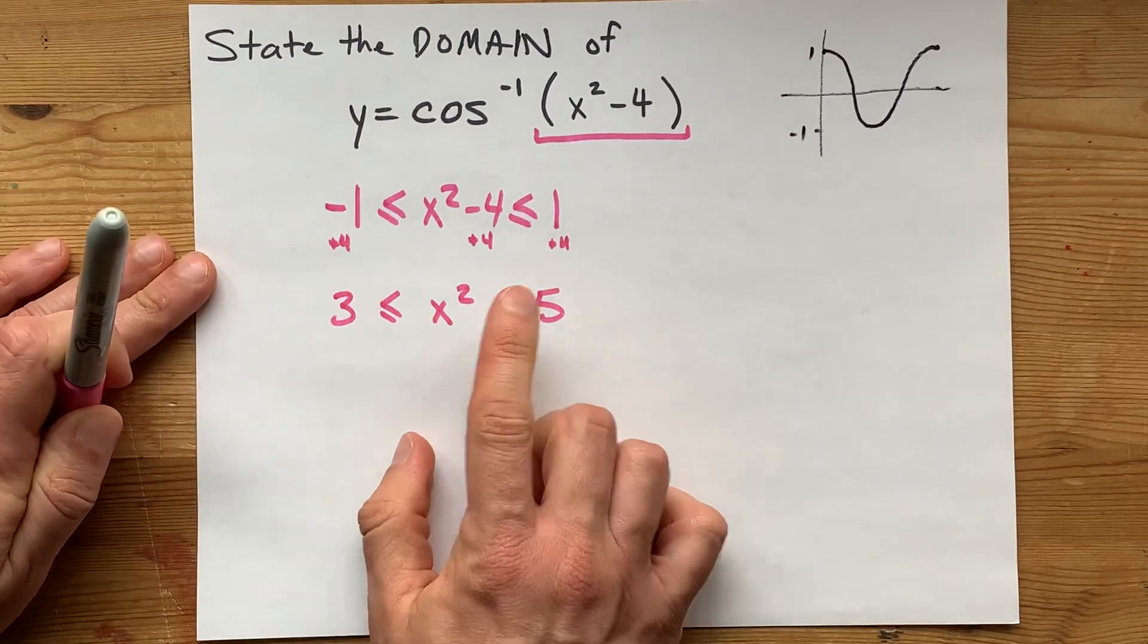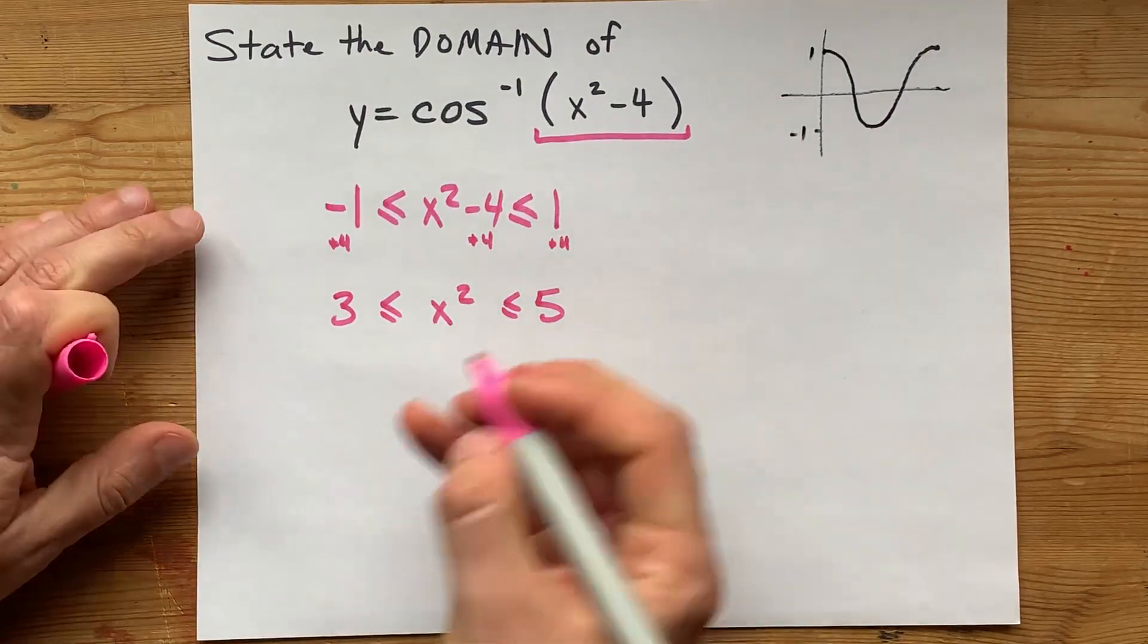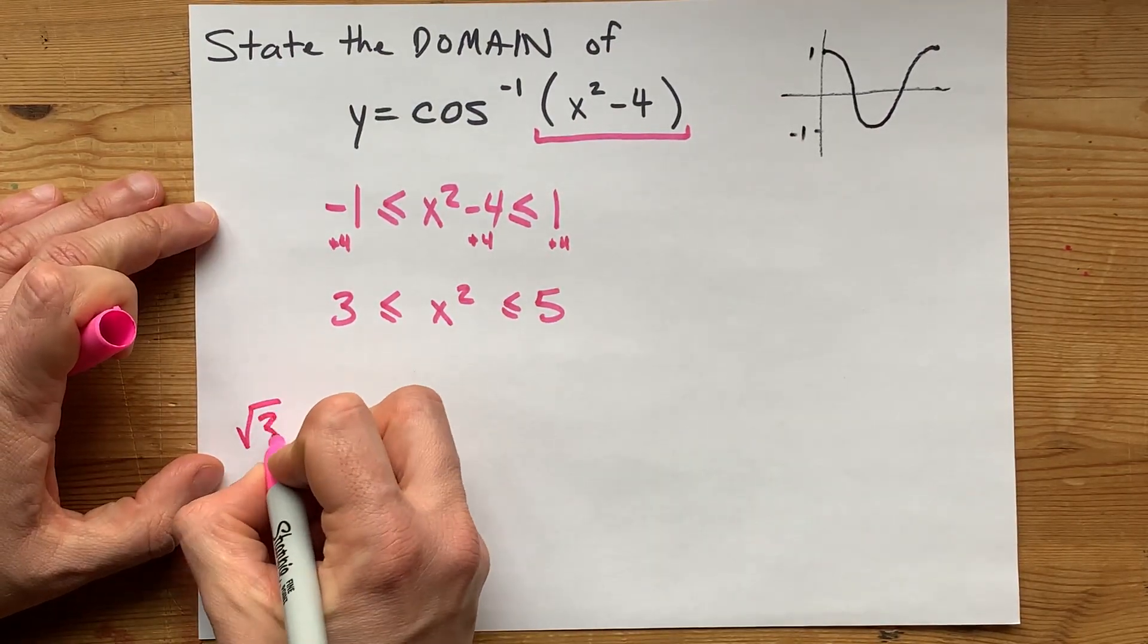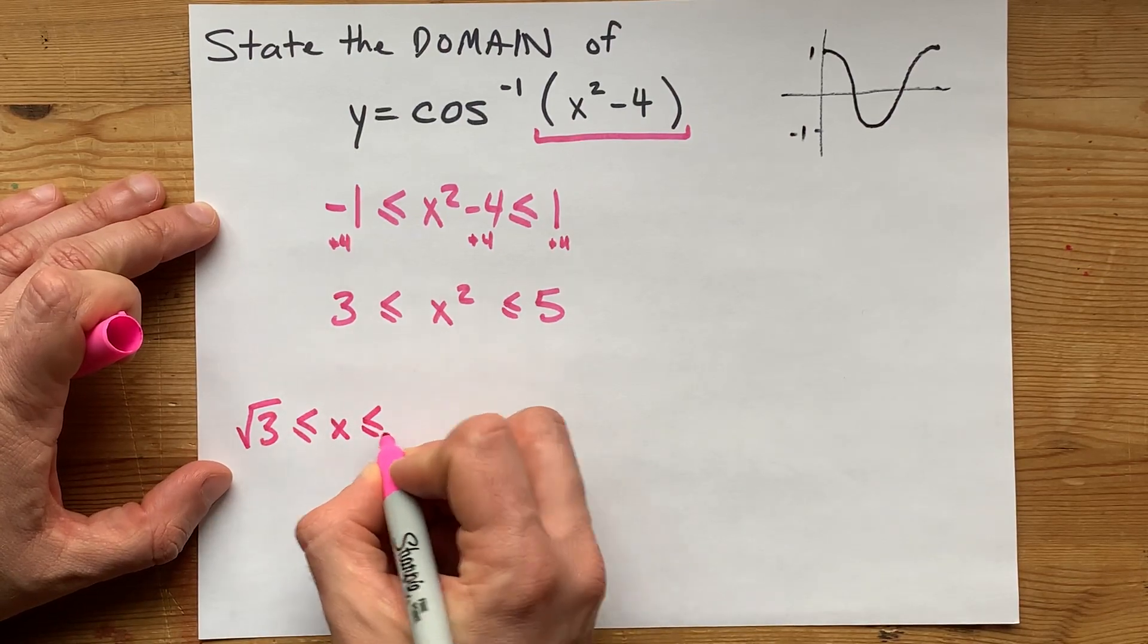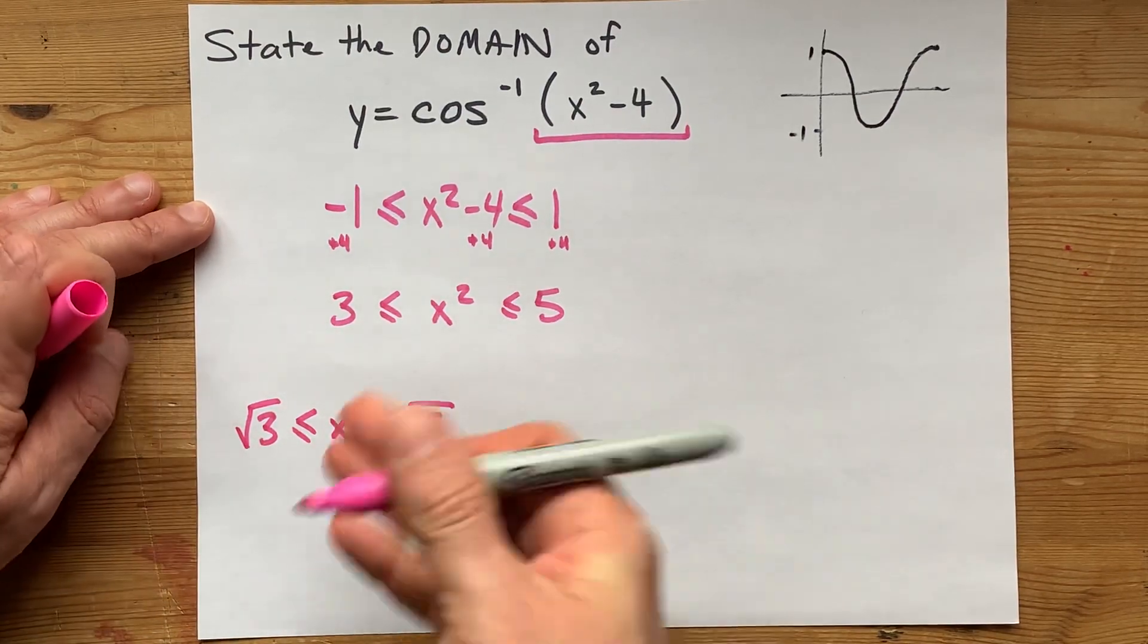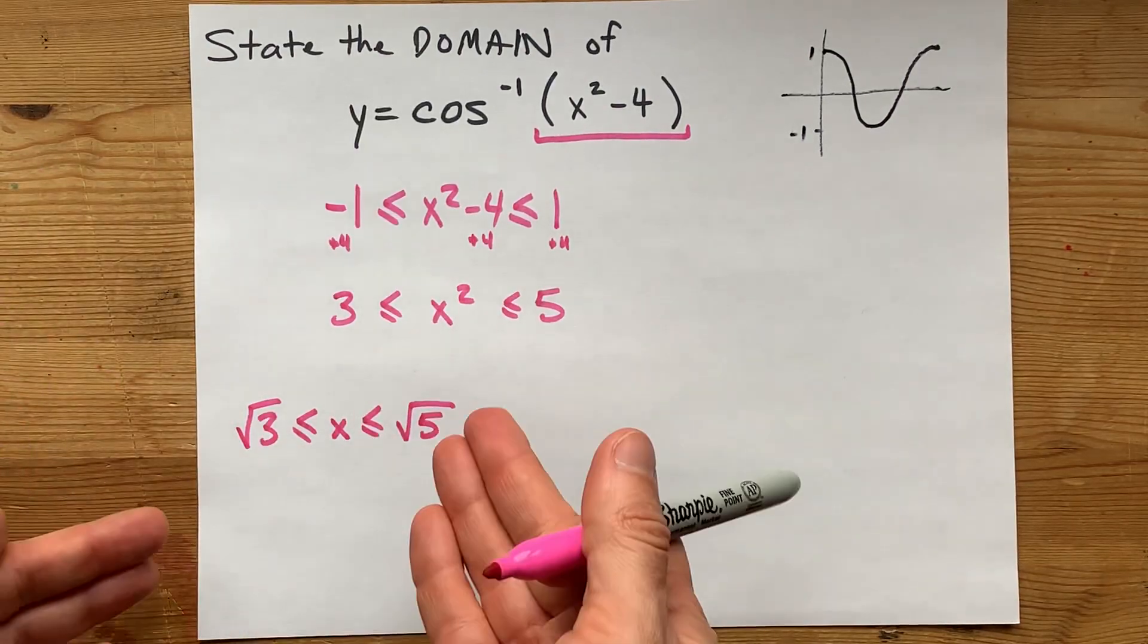The first thing you're going to want to try to do is square root all of these separately. I'm going to show you what that gives you. It's root 3 is less than or equal to x is less than or equal to root 5. And this is indeed part of the domain.